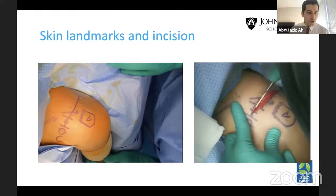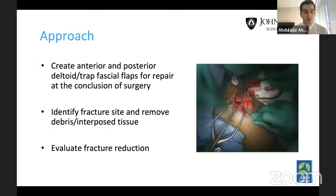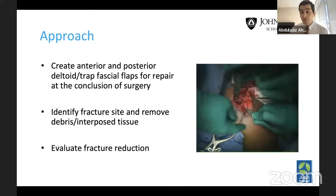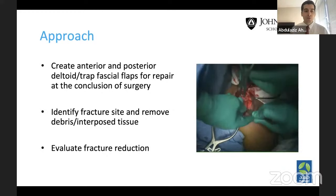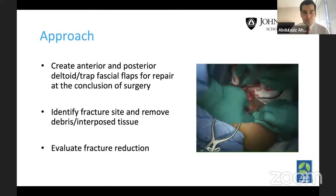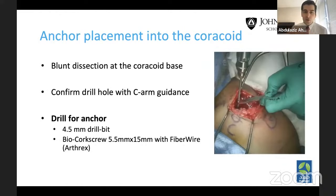After visualizing the fracture site, as with any fracture, you clear the fracture site from debris and interposed tissues and evaluate the fracture reduction. Then we minimally dissect in front of the clavicle where the coracoid lies, using blunt dissection to localize the coracoid. Using steer arm guidance, we confirm our drill position over the coracoid with fluoroscopy.